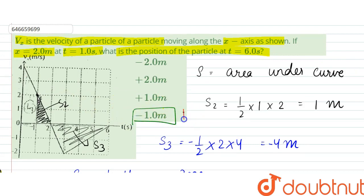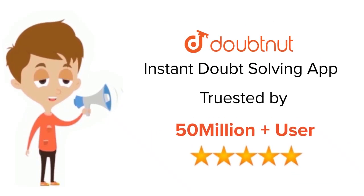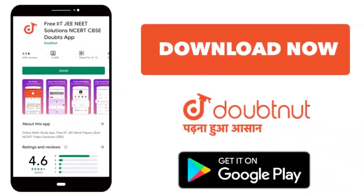That is option D is the correct answer. Thank you. For class 6 to 12, IIT-JEE and NEET level, trusted by more than 5 crore students, download Doubtnet today.